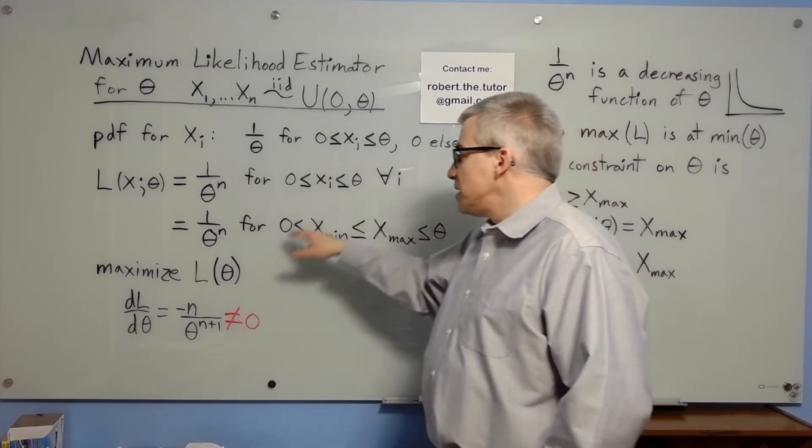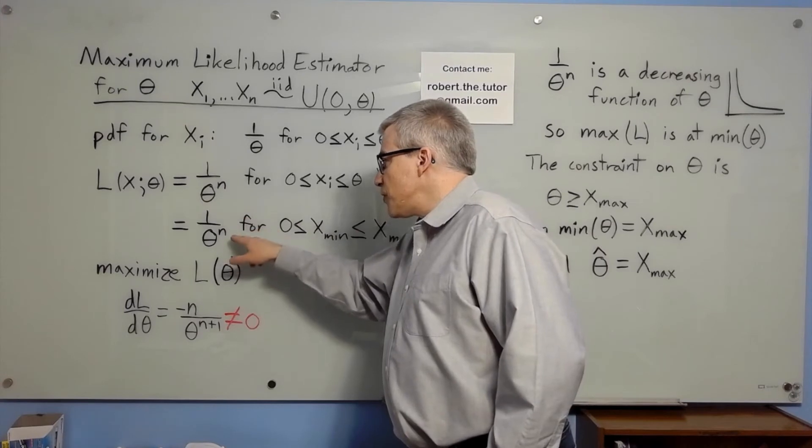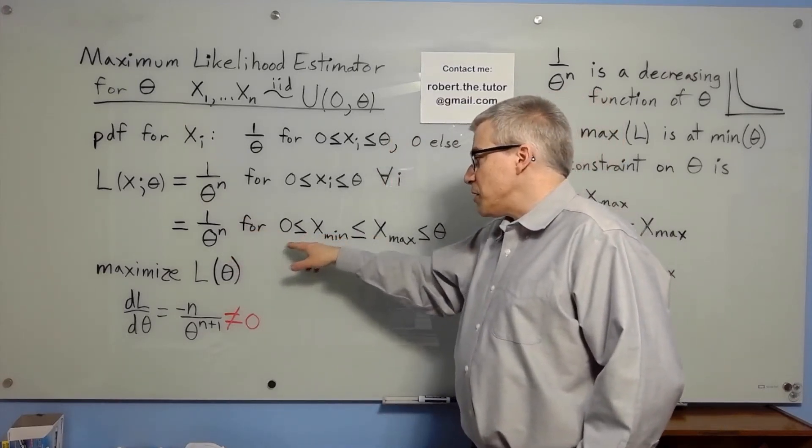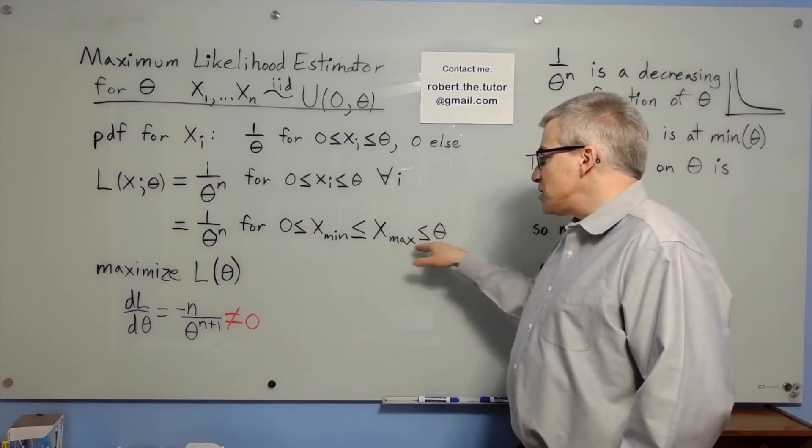Another way to say that is it's 1 over theta to the n for xmin greater than or equal to 0, and xmax less than or equal to theta.